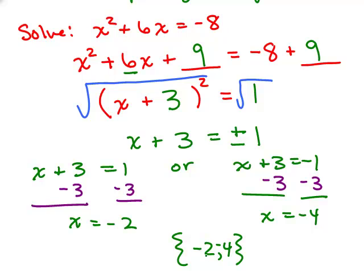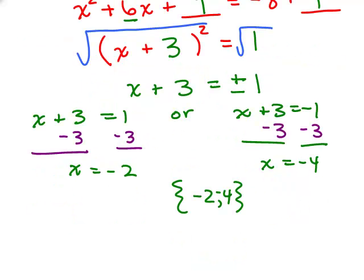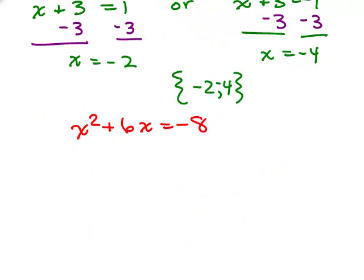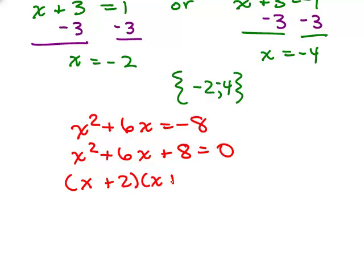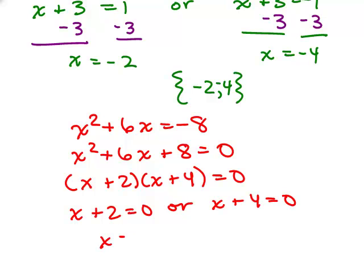Notice that my answer here—there were no square roots involved. That means that that problem could have been done by factoring. So let's just take the same problem: x squared plus 6x equals negative 8, and see if we could have done this a different way by factoring. Remember what you do is you set the equation equal to 0, factor the left-hand side, set each factor equal to 0, and solve each equation. Notice I get exactly the same answer.